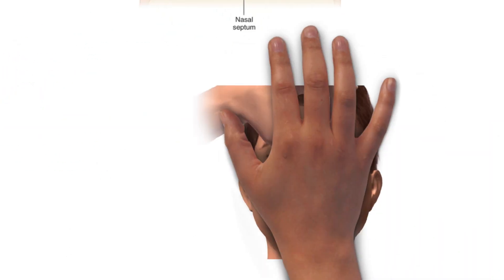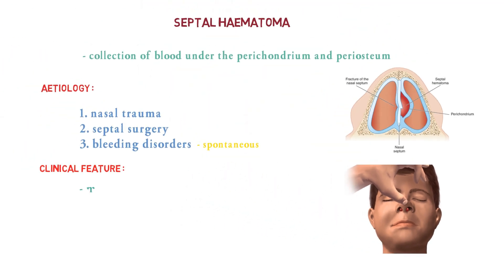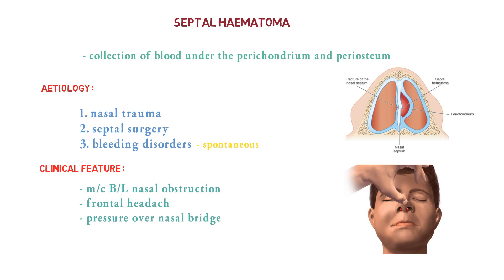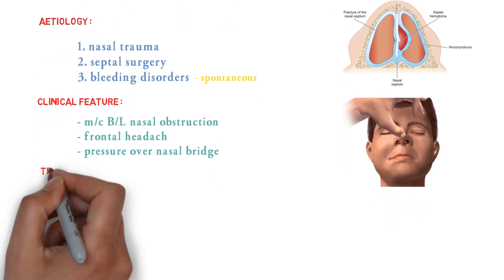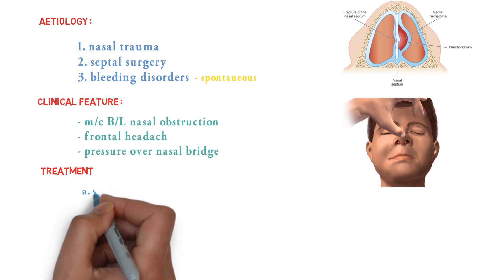Looking at this picture, the finding is bilateral nasal obstruction. The clinical features of septal hematoma include bilateral nasal obstruction, which is the commonest presenting symptom, along with frontal headache and a sense of pressure over the nasal bridge.